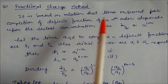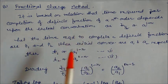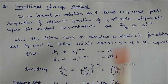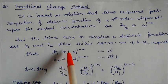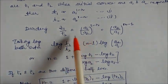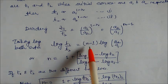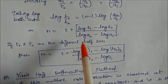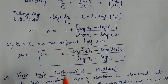The third method is the fractional change method. It is based on the relation that the time required for completion of a definite fraction of an nth order reaction depends on the initial concentration as t₁/ₙ proportional to 1/(a to the power 1 minus n). Taking two times t1 and t2 for initial concentrations a1 and a2, dividing and taking log gives: n equal to 1 plus (log t1 minus log t2) divided by (log a2 minus log a1). If t1 and t2 are different half-lives, we get a simplified expression for n.